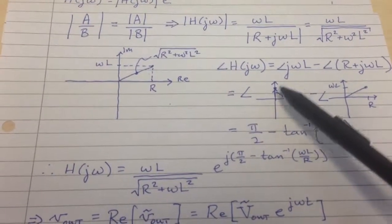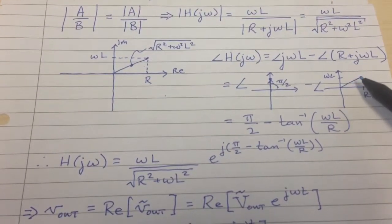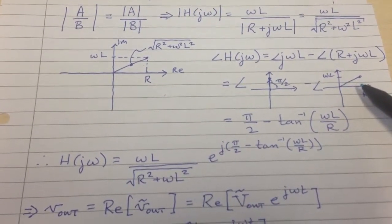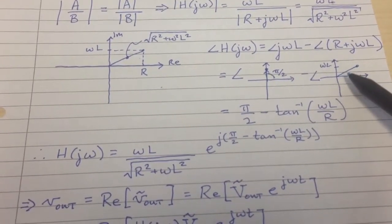So j, the argument of j is just π over 2, and the angle corresponding to this R plus jωL function is going to be the arctangent of the ωL over R. So it's going to be this angle in here.